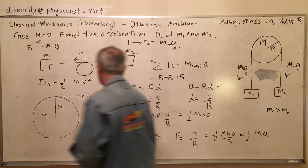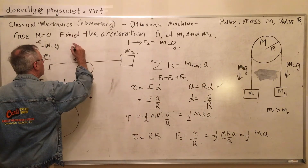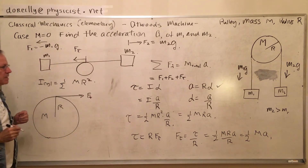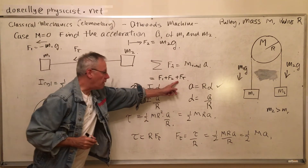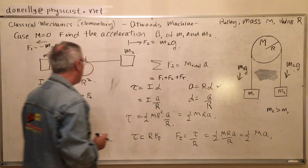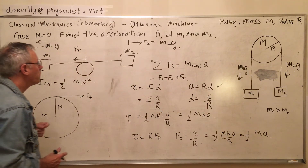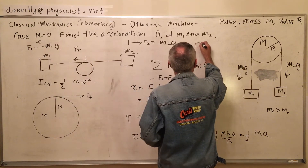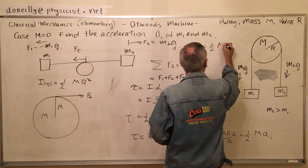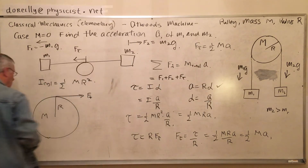So the force due to the torque — the resistance force F_torque — has to be overcome and included in our equations. It's just a half m·A. So now we write up all our equations. M, of course, is the mass of the pulley.